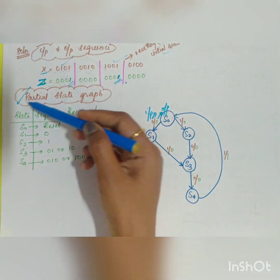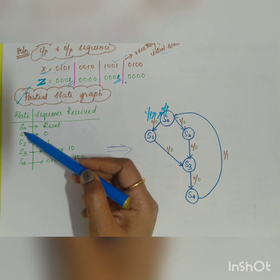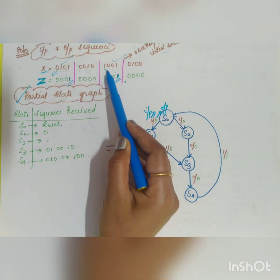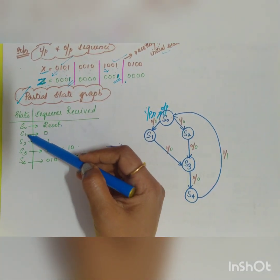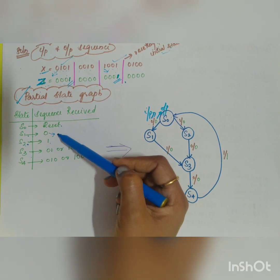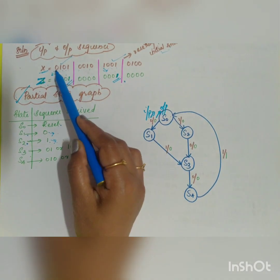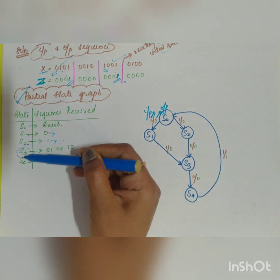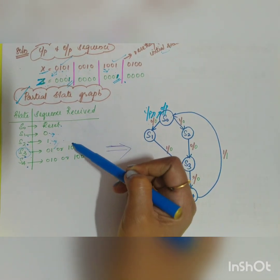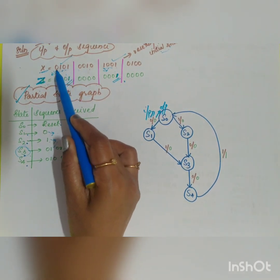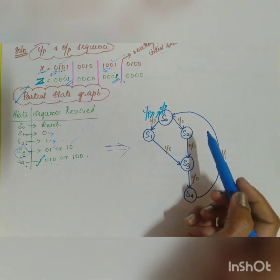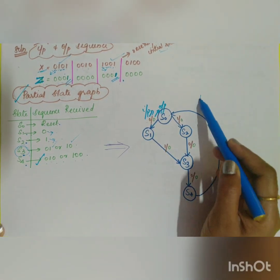We assume S0 is the reset condition. From S0 there are two options: input 0 goes to S1, input 1 goes to S2. From S1 and S2, the next state S3 can receive 01 or 10. From S3, the next state S4 can receive 010 or 100. This is how states S0 through S4 are designed for the partial state graph.